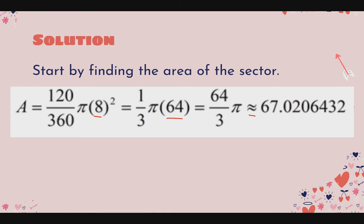Why do we use approximately-equal instead of equal here? Because the value of pi is a non-terminating decimal — no one has ever computed its exact value. Since we cannot get the exact value, we use approximation. The more decimal places we use for pi, the closer we get to the true value. So approximately 67.0206432 — using more decimal places gives us a more precise result.